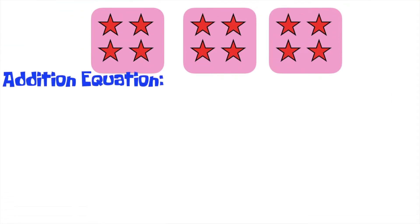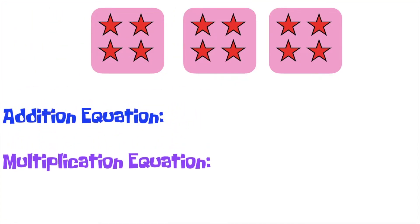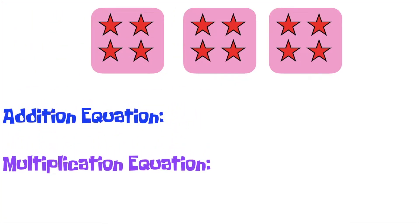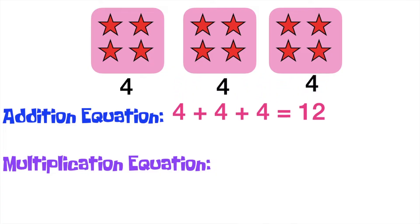Let's have the next example. How about if I have this illustration? Let's write the addition equation and multiplication equation for this illustration. The first thing that we need to do is to count the stars in each set. We have four stars in each set. So let's write the addition equation by adding all the numbers. Four plus four plus four is equal to 12.